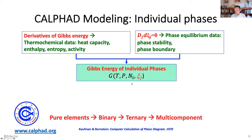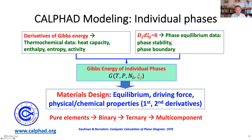In CALPHAD modeling, we start with pure elements, then binary, then ternary, and then multicomponent. In that way we can build up huge databases for different materials. For example, commercial alloy databases have over 20 elements. With a database, you can do material design, equilibrium calculations, driving forces, and physical and chemical properties — the first and second derivatives of the free energy — which are very useful for many different properties.